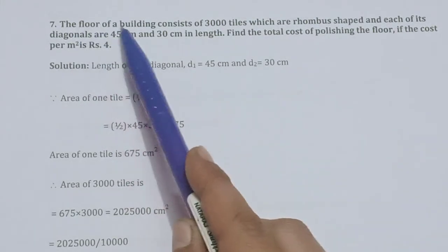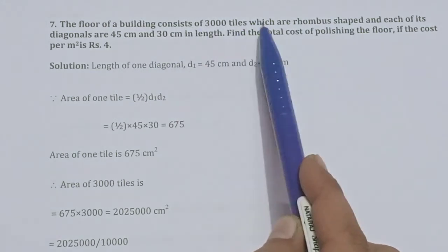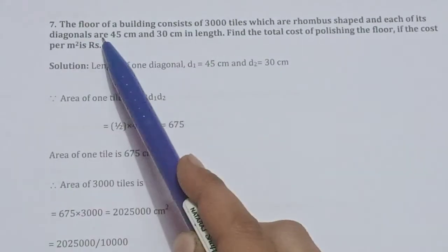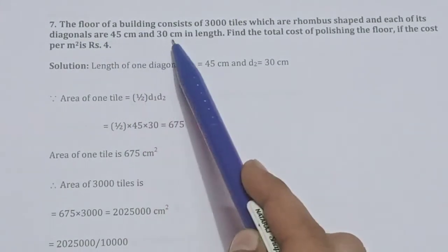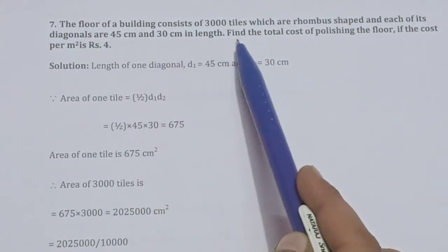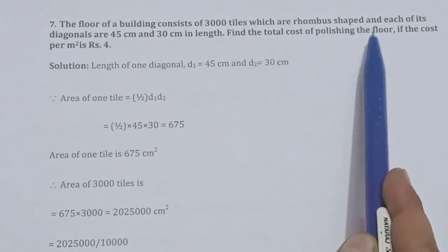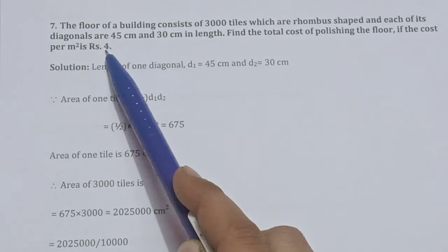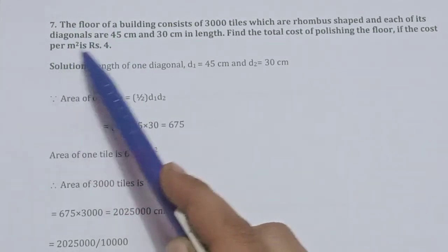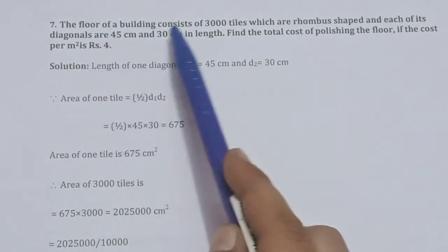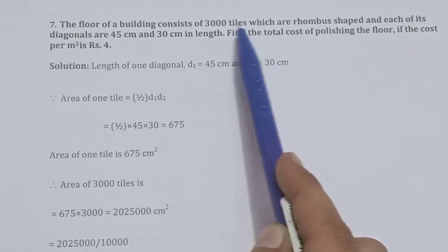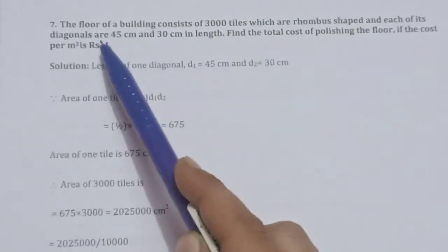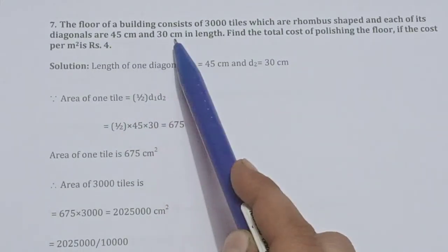Question 7: The floor of a building consists of 3,000 tiles which are rhombus shaped, and each of its diagonals are 45 cm and 30 cm in length. The building has 3,000 tiles in rhombus shape with diagonals 45 cm and 30 cm.